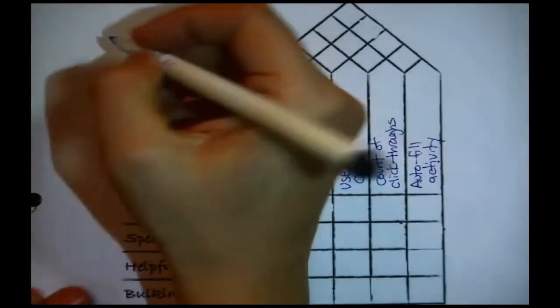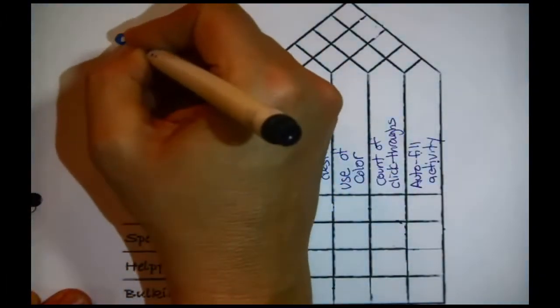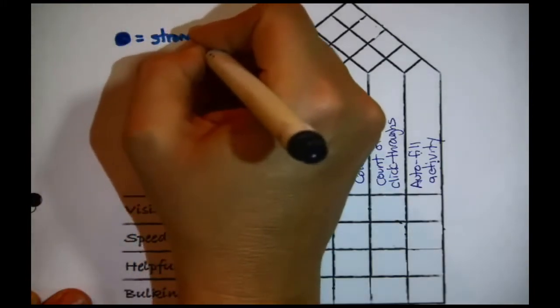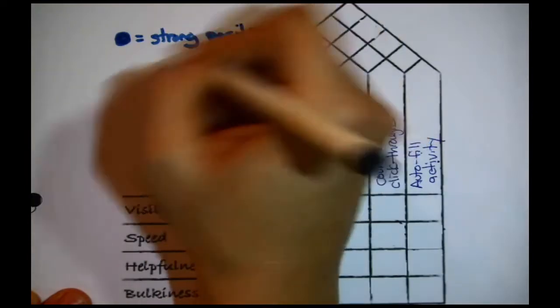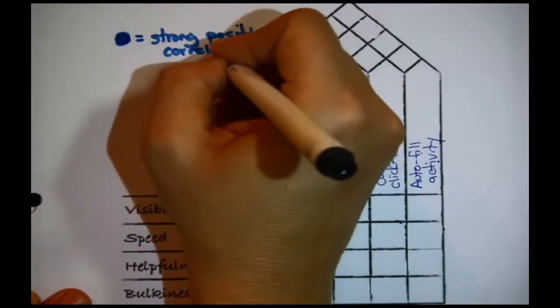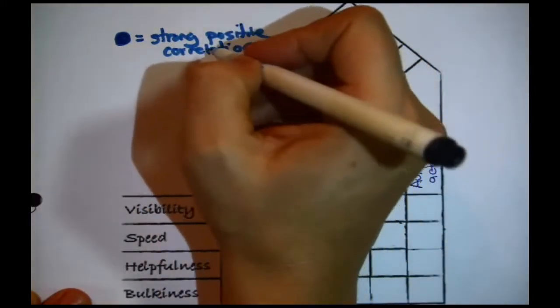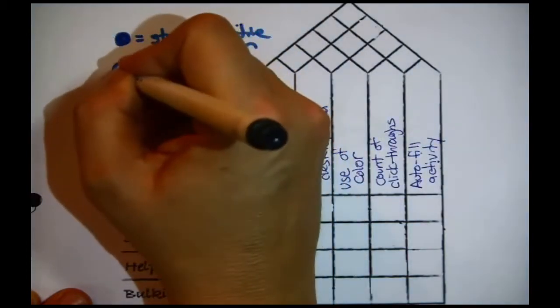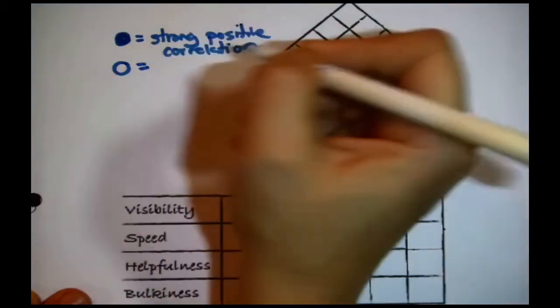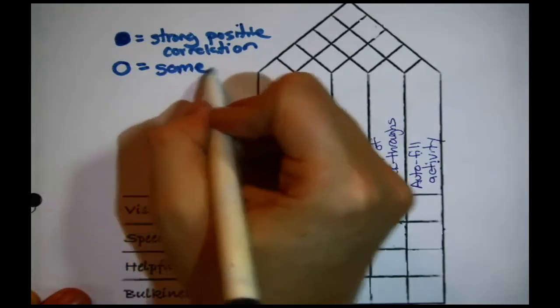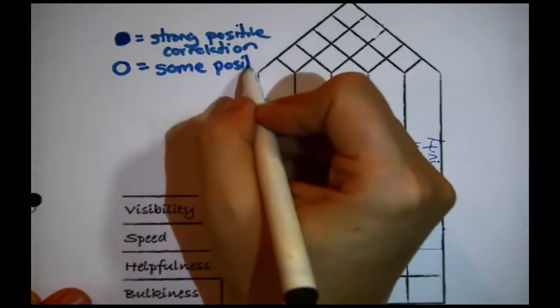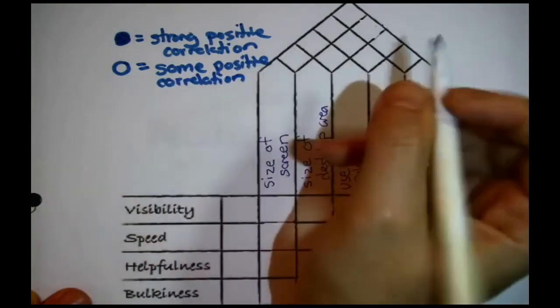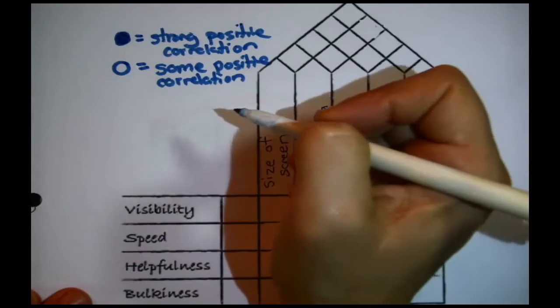I'm going to say, all right, and this is, you know, pretty typical, a big solid dot. Let's let that be strong positive correlation. What's that mean? Look back on the page before. That means that you were at least 0.85 or below negative 0.85 versus an empty dot, some positive correlation, which means you at least hit 0.6 or negative 0.6, but you didn't make the 0.85 or negative 0.85.